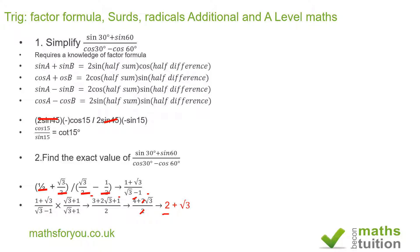So the answer is 2 plus root 3. You can verify that 2 plus root 3 is indeed the exact value of cot 15 degrees.